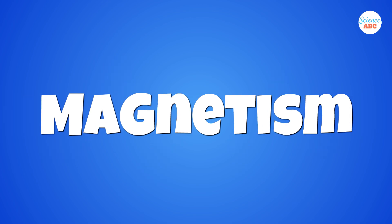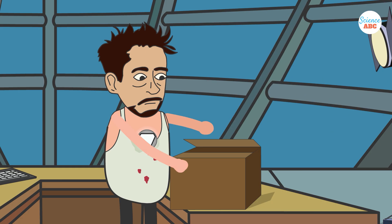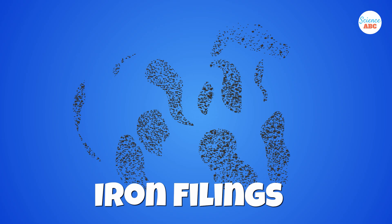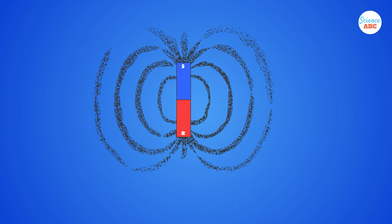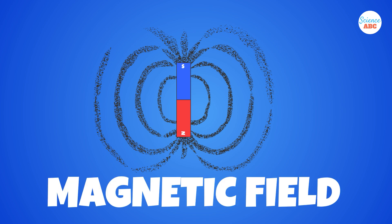Now let's shift our focus to magnetism. If you take a bar magnet and sprinkle small iron pieces around it, you will notice that the filings arrange themselves in beautiful patterns around the magnet, forming what we refer to as magnetic fields. In other words, a magnetic field is the region around a magnetic material within which it exerts a force of magnetism.